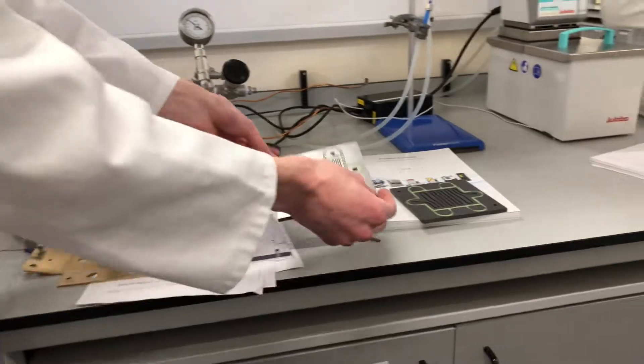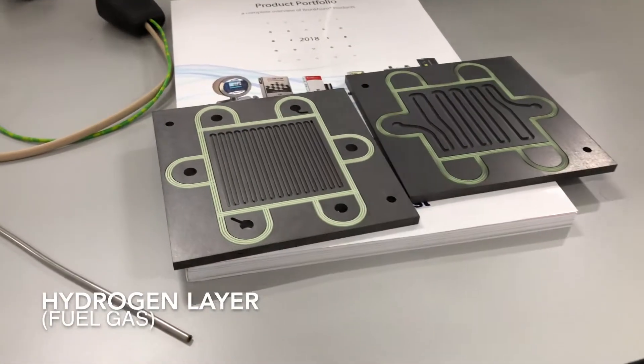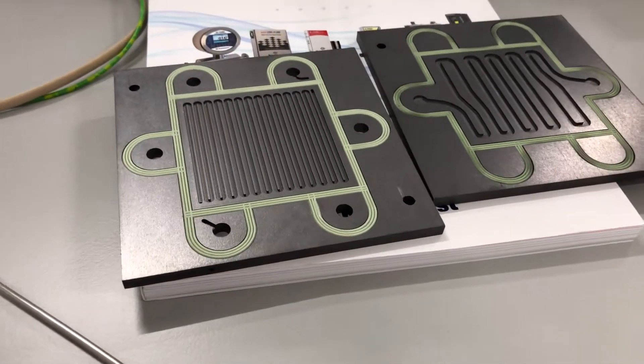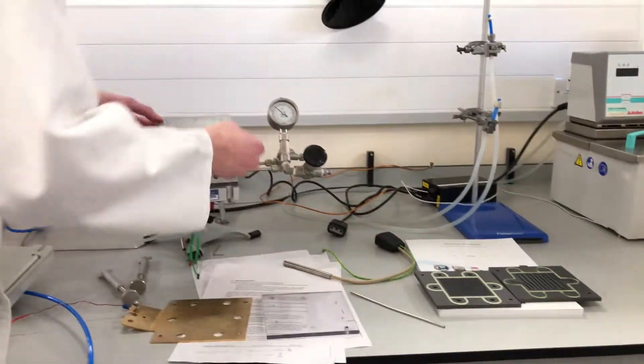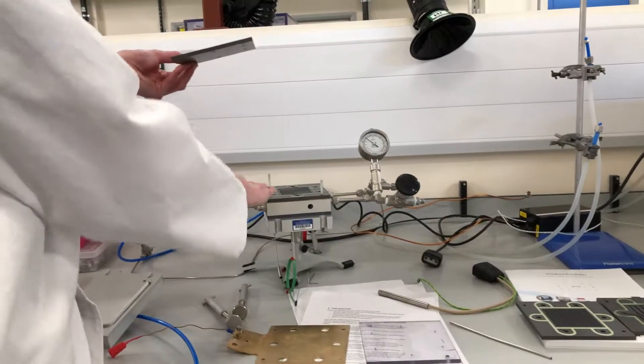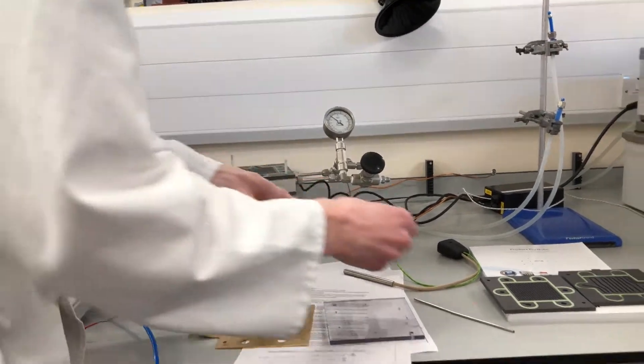So this next layer, this is the hydrogen layer. The channels themselves are a lot thinner, therefore you can maximize the actual contact itself. And again, it's just replicated again on the other side, so you've got your five layers on the other side there.